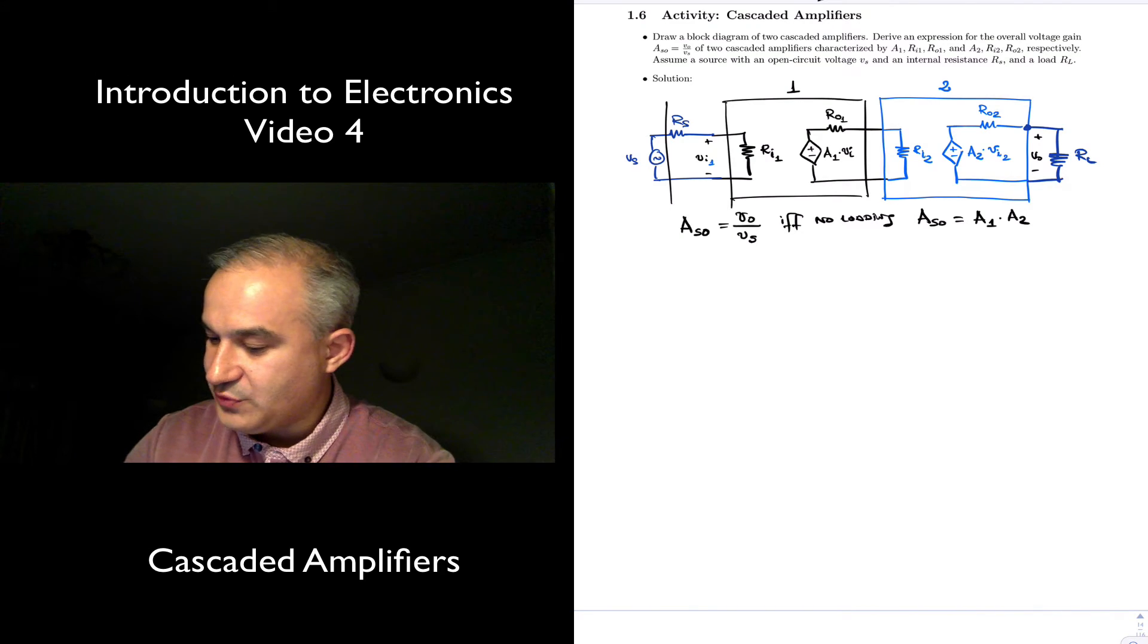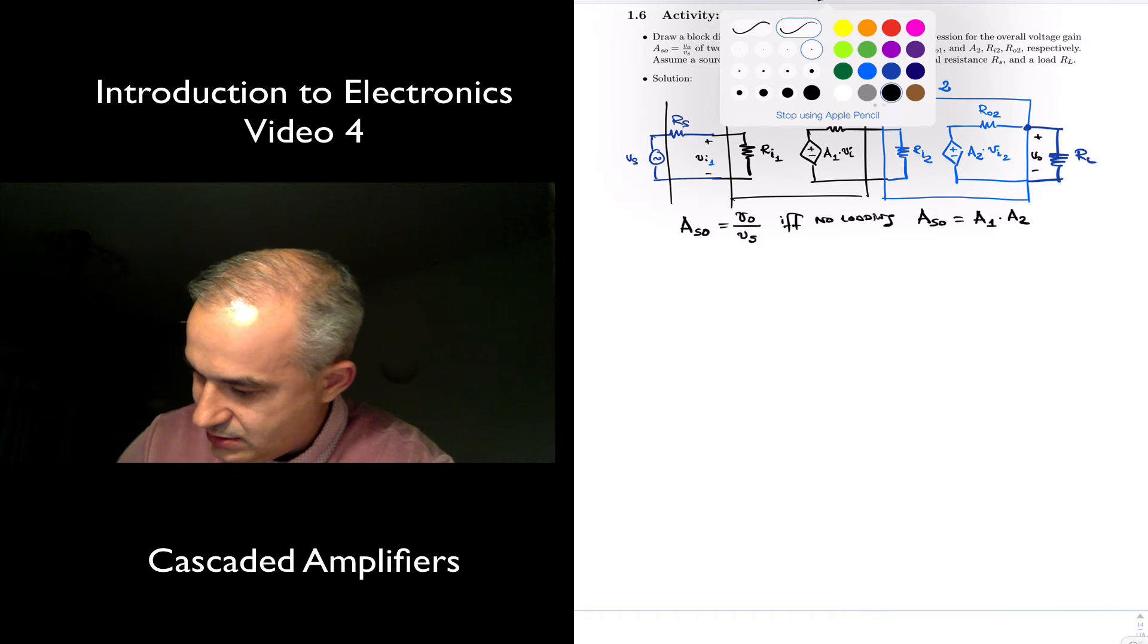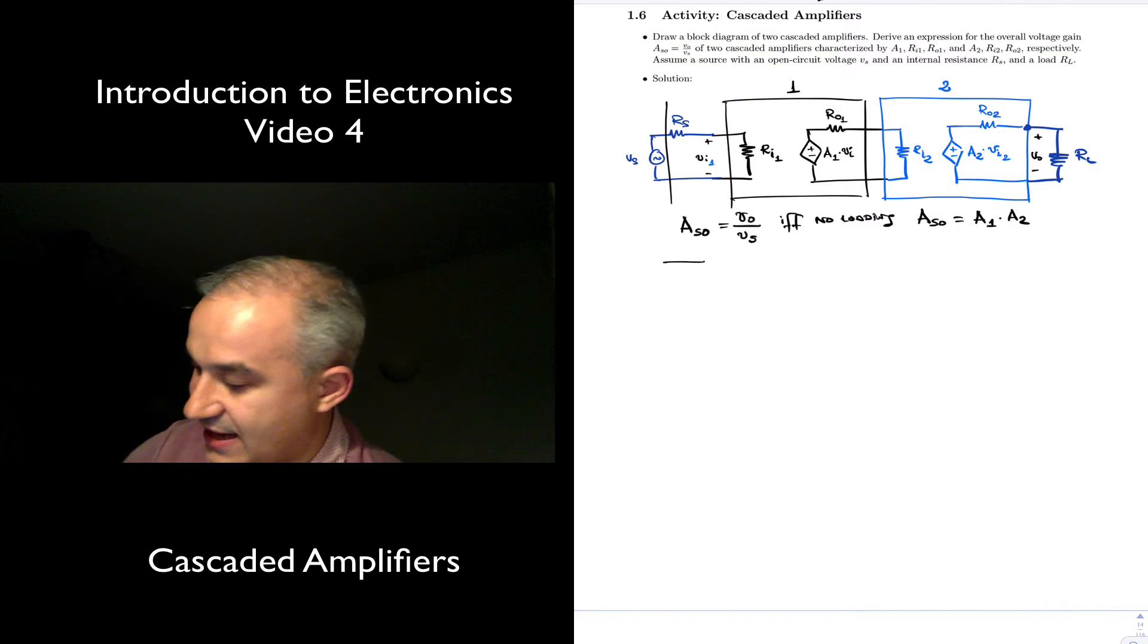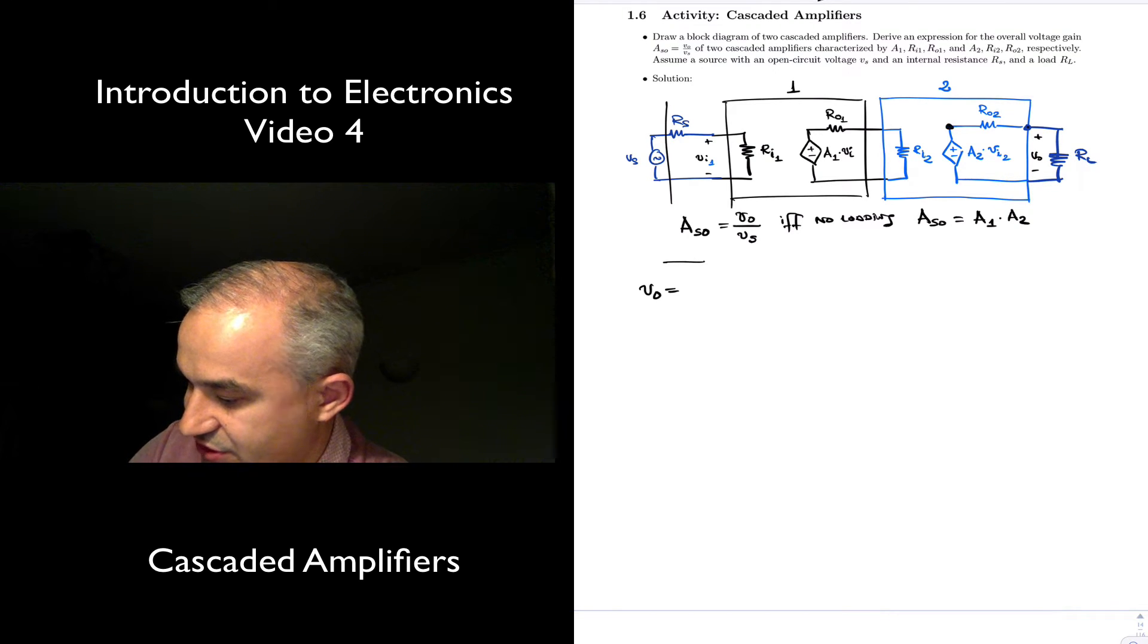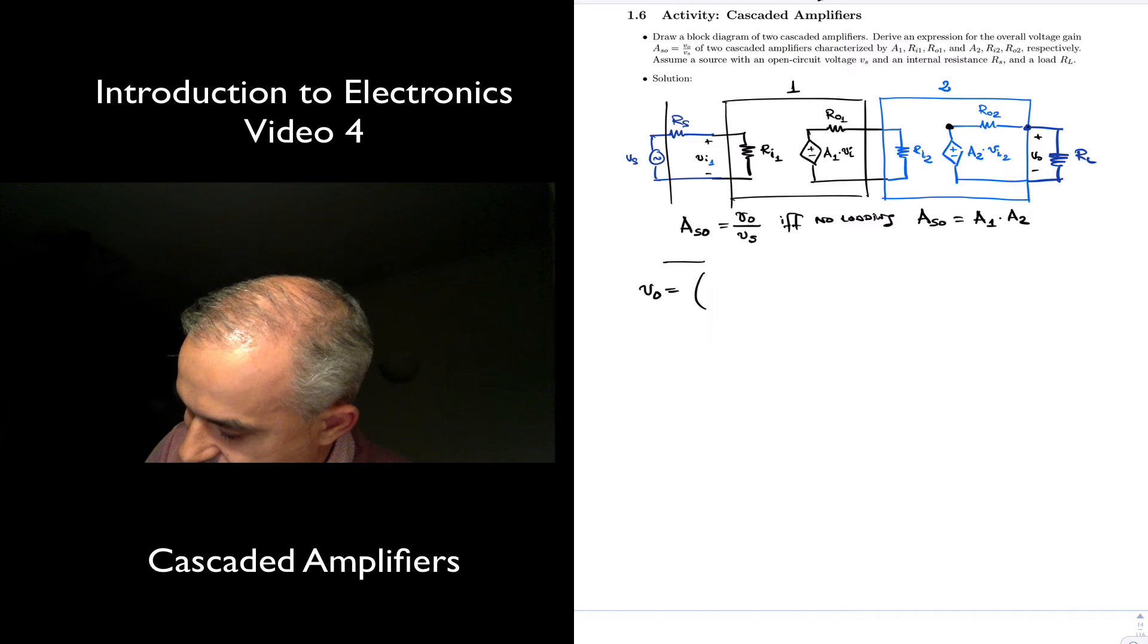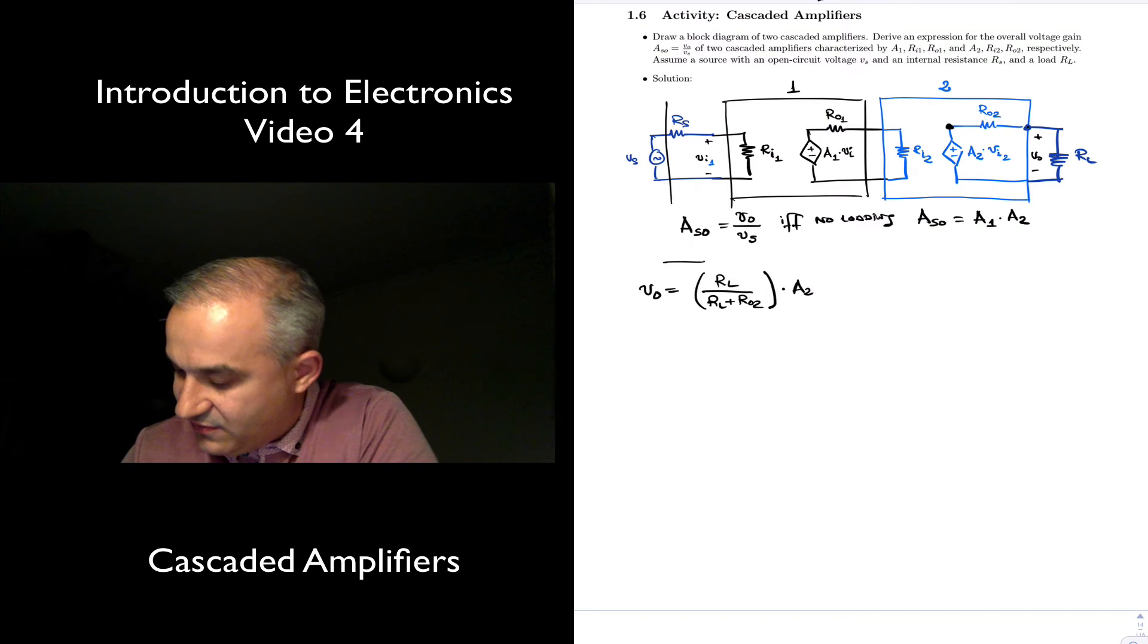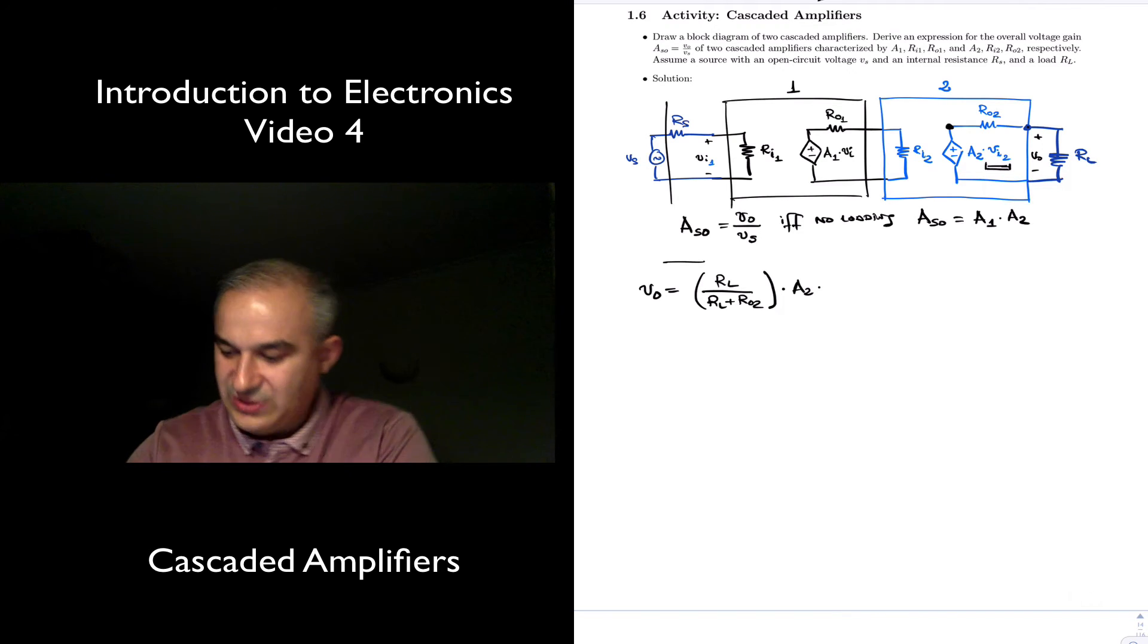Let's see what happens when you have loading. With loading, let's look for an expression for the output voltage starting at the end. The output voltage - we have a voltage divider here. The output voltage is going to be RL over RL plus Ro2 times the voltage here is A2, the gain factor of the first one, times this voltage.